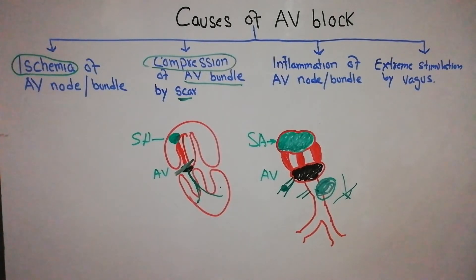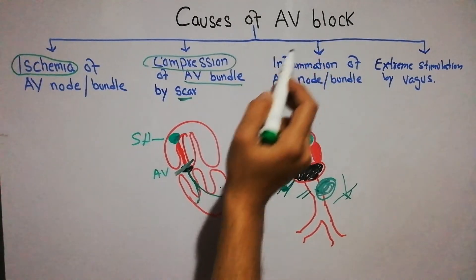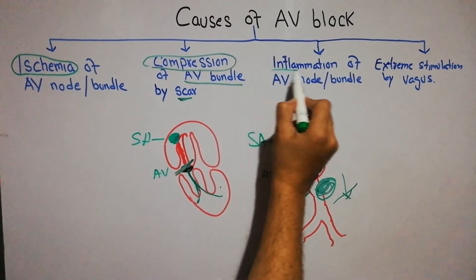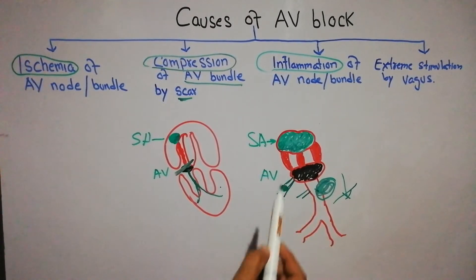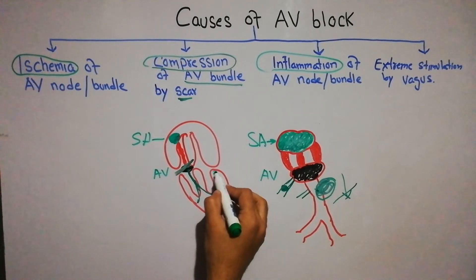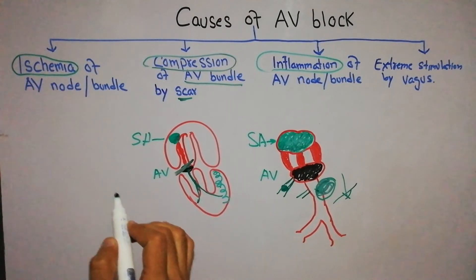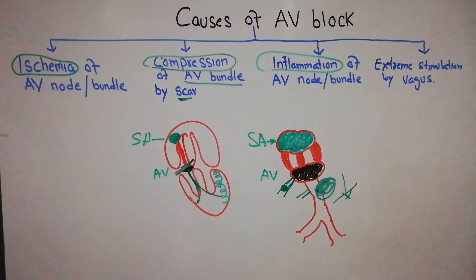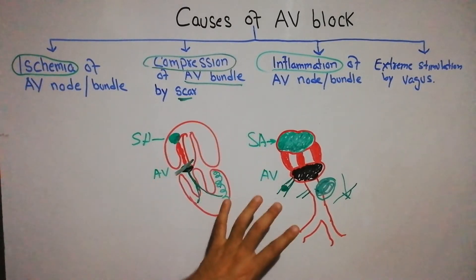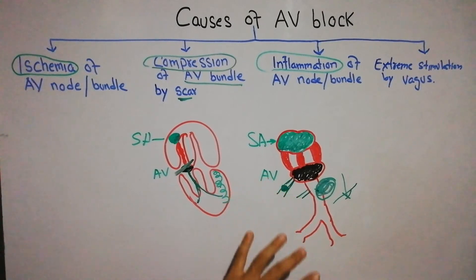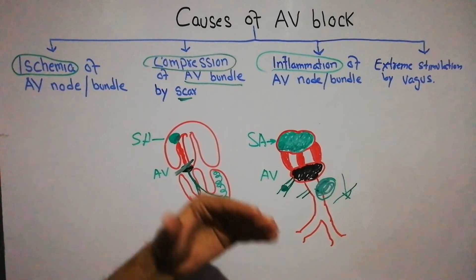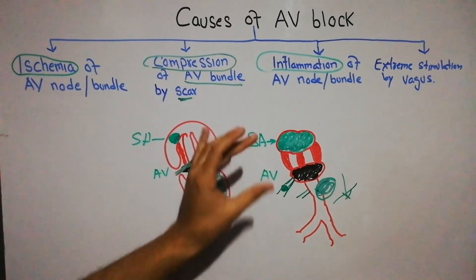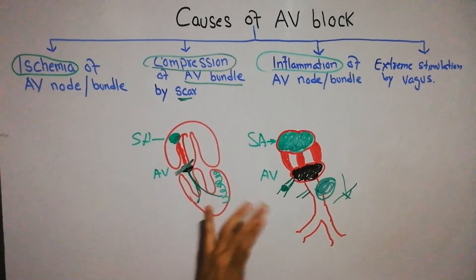Another cause for atrioventricular block is inflammation. If the AV node or AV bundle becomes inflamed due to an inflammatory process — which could be due to myocarditis or rheumatic fever — that will decrease the ability of the AV bundle or AV node to transfer impulses from the atria to the ventricle.